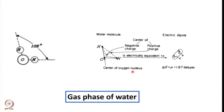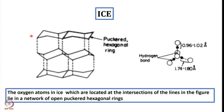First consider the gas phase of water. I will explain one by one the structural differences which come when you move from gas to liquid to solid. This is the structure of gaseous water — HOH with about 105 degree angle. There is a center of negative charge and a center of positive charge, so this is equivalent to a dipole. The structure of gaseous water is just individual H2O molecules. When you talk about the solid state of water — ice for example — the arrangement of water molecules in ice is like a puckered hexagonal ring.